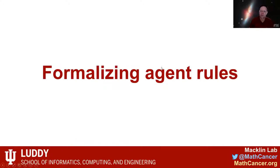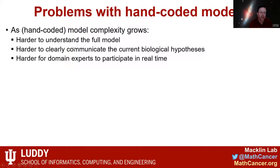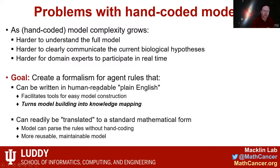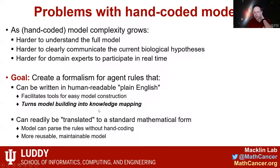I want to close with some thoughts on where we're taking this modeling going forward and how we want to formalize some of the agent rules. What we've found, especially for the COVID-19 model, is that as a hand-coded model's complexity grows, it gets a lot harder for any individual to understand the full model, harder to communicate the current biological hypotheses, you can even forget some of the biological hypotheses, it makes it very difficult to reproducibly write about your work, and it gets a lot harder to communicate with domain experts and get them to participate in real time.